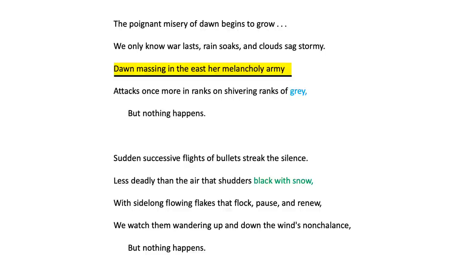In line 14, we are told that nature attacks once more, portraying the weather as relentless. By describing the 'ranks on shivering ranks,' it mirrors the soldiers in the trenches. By using the colour grey, Owen emphasises how the battlefield is lifeless and cold. Incidentally, grey was also the colour that the German army wore, so here Owen is aligning both of his enemies with each other — both the harsh weather and the Germans.